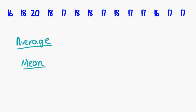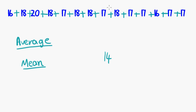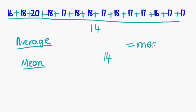So in this case there are 14 data points. What we're going to do is add these together: 16 plus 18 plus 20 plus 18 plus 17 plus 18 plus 18 plus 17 plus 18 plus 17 plus 17 plus 16 plus 17 plus 17, all divided by 14. That will give us the mean, which in this case is 17.429, worked out on a calculator by adding all of these up and dividing by 14.